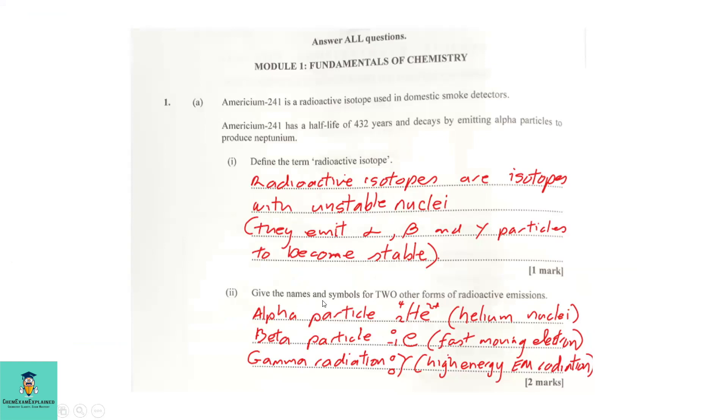Part 2. Give the names and symbols for two other forms of radioactive emissions. Now because we are reviewing the exam paper, I'm going to give you all the possible answers. And of course, if something like this comes up again, you can give any two. So here we have alpha particle, which is the helium nuclei. We have beta particle, which is the fast-moving electron. And we have gamma radiation, which is high-energy electromagnetic radiation.